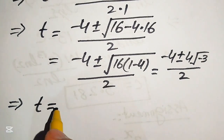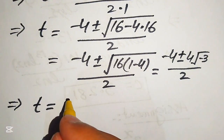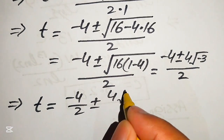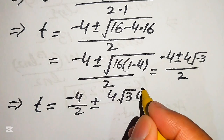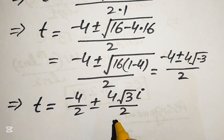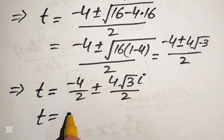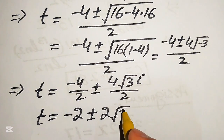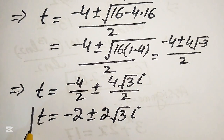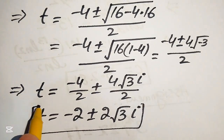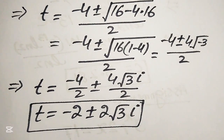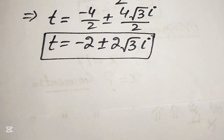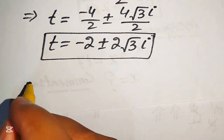Breaking the fraction, t equals −4/2 ± 4√3·i / 2, which simplifies to t equals −2 ± 2√3·i. These are the two complex roots from equation number 1. To find the remaining roots we move to equation number 2.